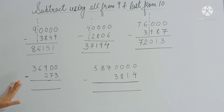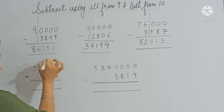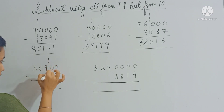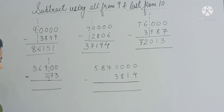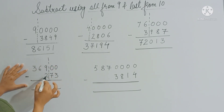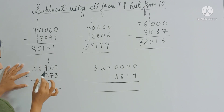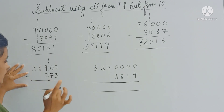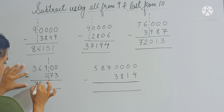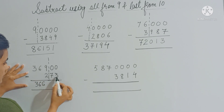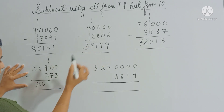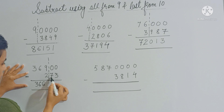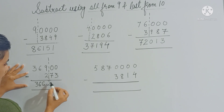Now this question has only two zeros, so separate those two zeros. 369 minus 2 gives you 367; now reduce 367 by 1 to get 366. Here apply 'all from 9, last from 10': 7 plus 2 gives you 9 and 3 plus 7 gives you 10.